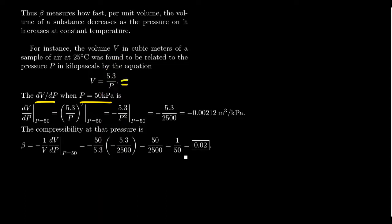5.3 divided by P. We can write that as 5.3 times P to the negative one. You could use the quotient rule if you prefer, but the power rule is going to be a lot easier here. Taking the derivative of 5.3 times P to the negative one, you're going to end up with negative 5.3 over P squared or P to the negative second power right there.